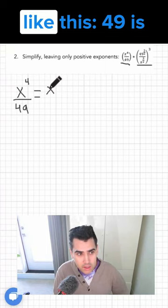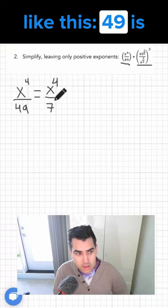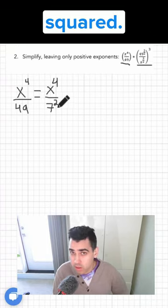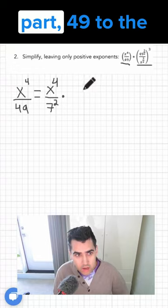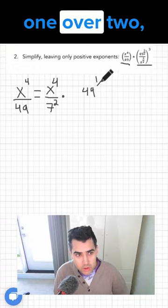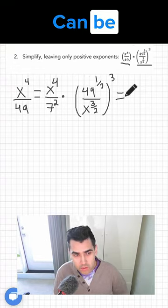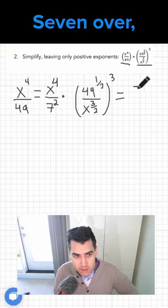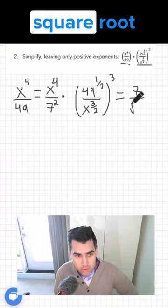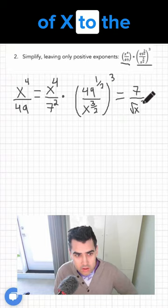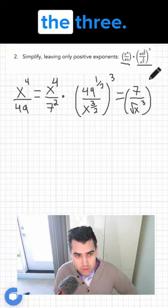We can rewrite like this. 49 is equal to 7 squared. The second part, 49 to the 1 over 2 to the 3 can be rewritten as 7 over square root of x to the 3, all to the 3.